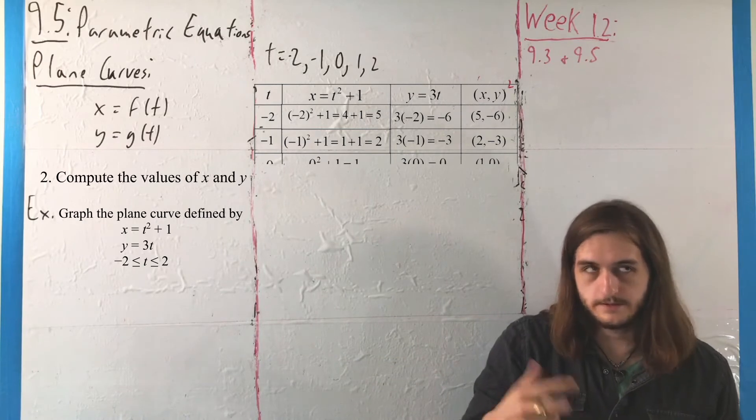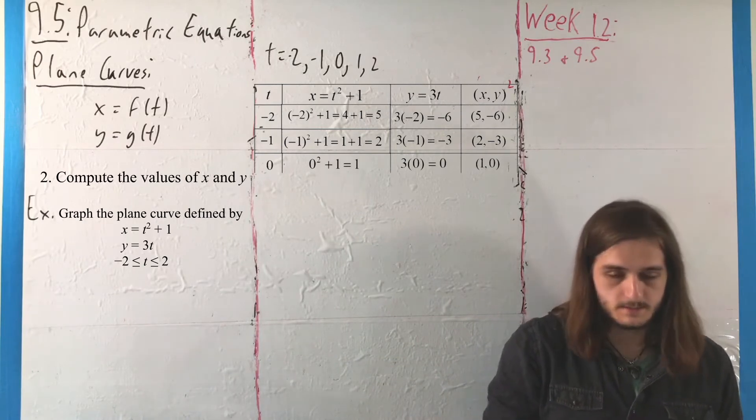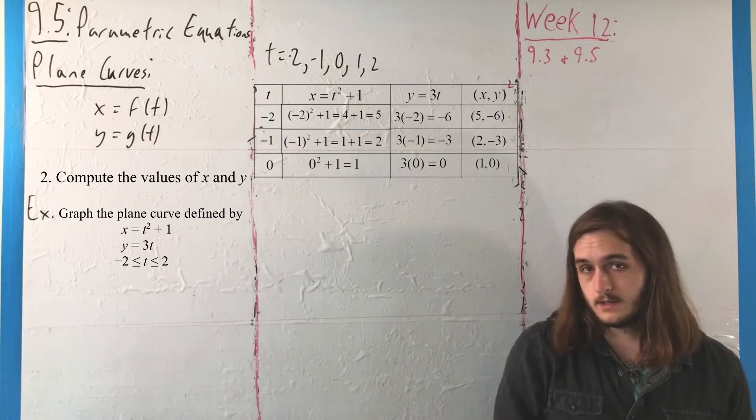At 0, we have 0 squared plus 1, which is 1, and 3 times 0, or 0, for the point (1, 0).